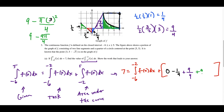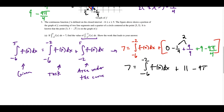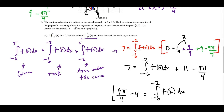So we add plus nine minus nine pi over four. Now the rest is just algebra. Combining terms: negative one fourth plus nine equals eight over four, which is two. So we have 7 equals the integral from negative 6 to negative 2 of f of x, plus two plus nine minus nine pi over four, giving plus 11 minus nine pi over four. Adding nine pi over four and subtracting 11 from both sides gives us the integral from negative 6 to negative 2 of f of x equals nine pi over four minus 4.